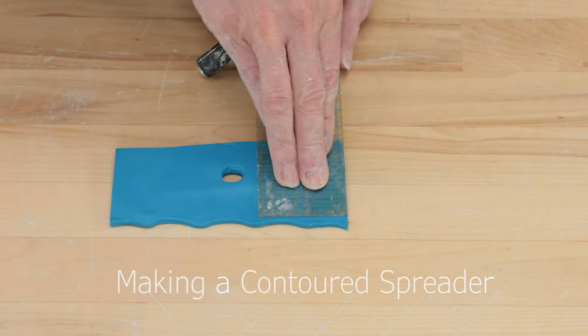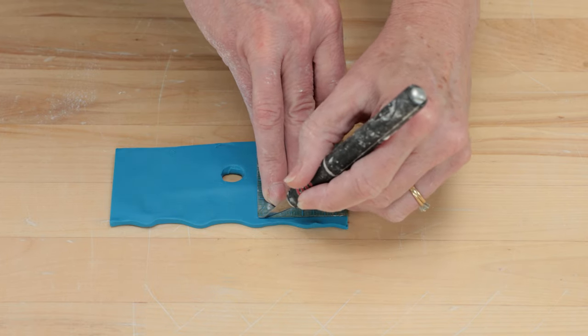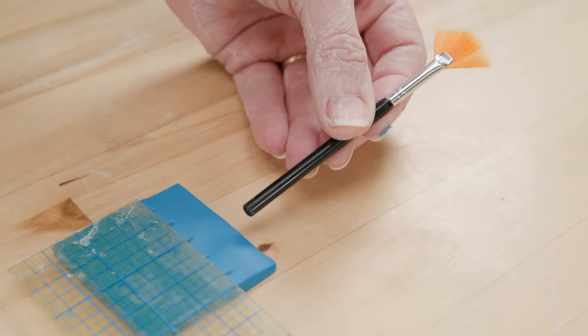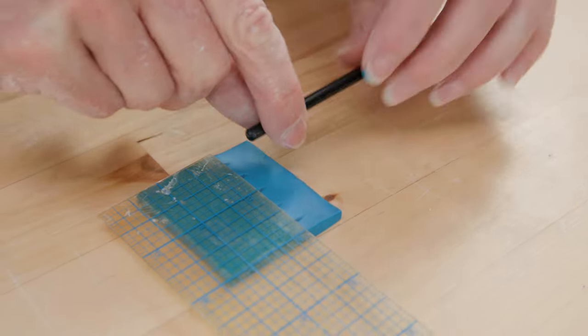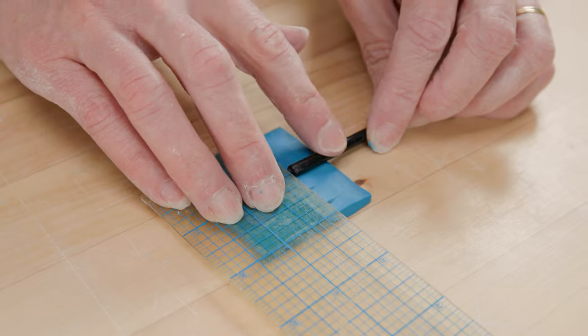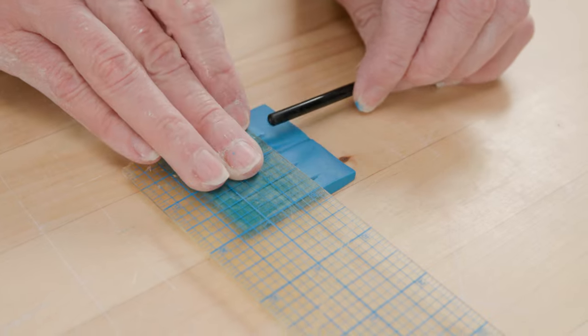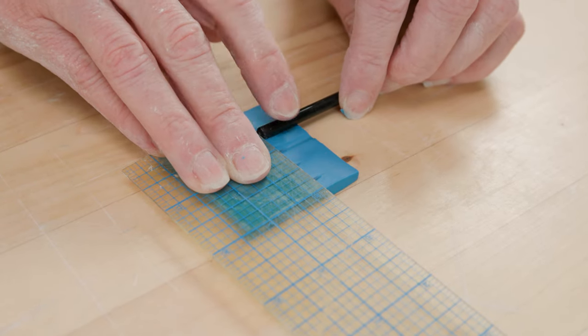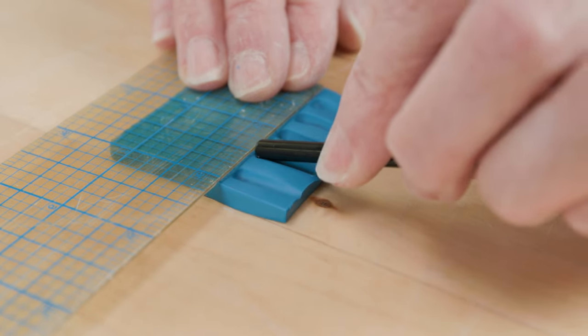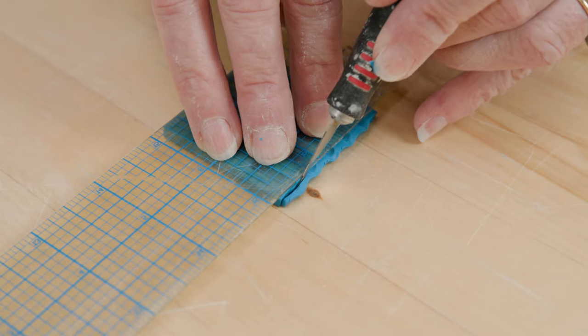Using the wedge clay I rolled out earlier, I took a clear ruler and cut around the ruler's end. I placed the ruler about a half inch from the thin edge parallel to it and made five evenly spaced marks. I pushed the blunt end of a paintbrush down into the clay along those marks.